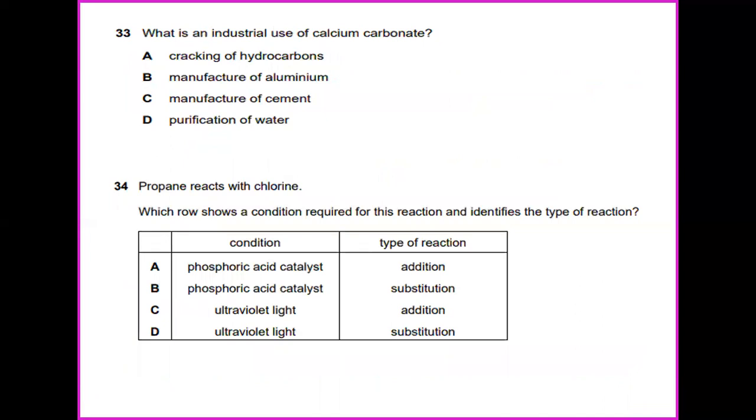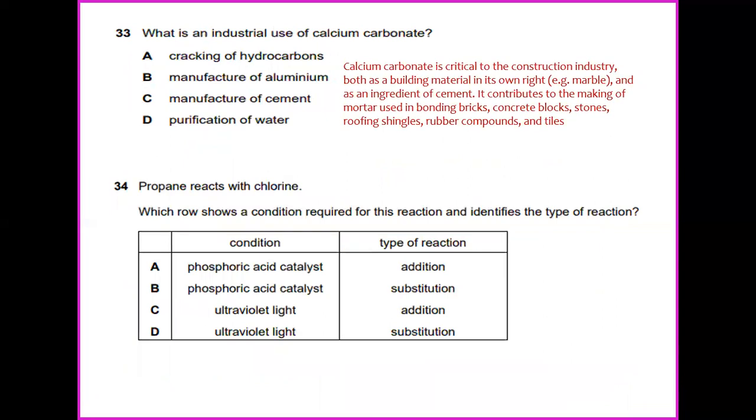What is an industrial use of calcium carbonate? Calcium carbonate is critical to the construction industry, both as a building material in its own right, for example marble, and as an ingredient of cement, which is manufacture of cement. It contributes to the making of mortar used in bonding brick, concrete blocks, stone, roofing tiles, rubber compounds, and tiles. So the answer for this will be C, manufacture of cement.